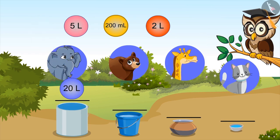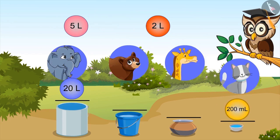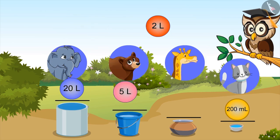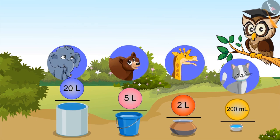Very good. Okay, so the capacity of the bowl will be two hundred ml. Right, now you all have got it. Capacity of bucket is five liters and capacity of utensil is two liters. Very good, kids.